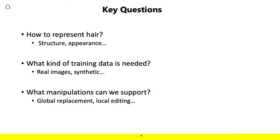So there are several key questions that we'll address here. One is how do we represent hair, in particular the structure and appearance? The second is, for these generative modeling techniques, what type of training data do we need? We'll see that both real and synthetic data can be useful when used appropriately. And finally, what types of manipulations can we support, such as example-based global replacement of the hairstyle or performing local edits to the appearance and structure of the hair?